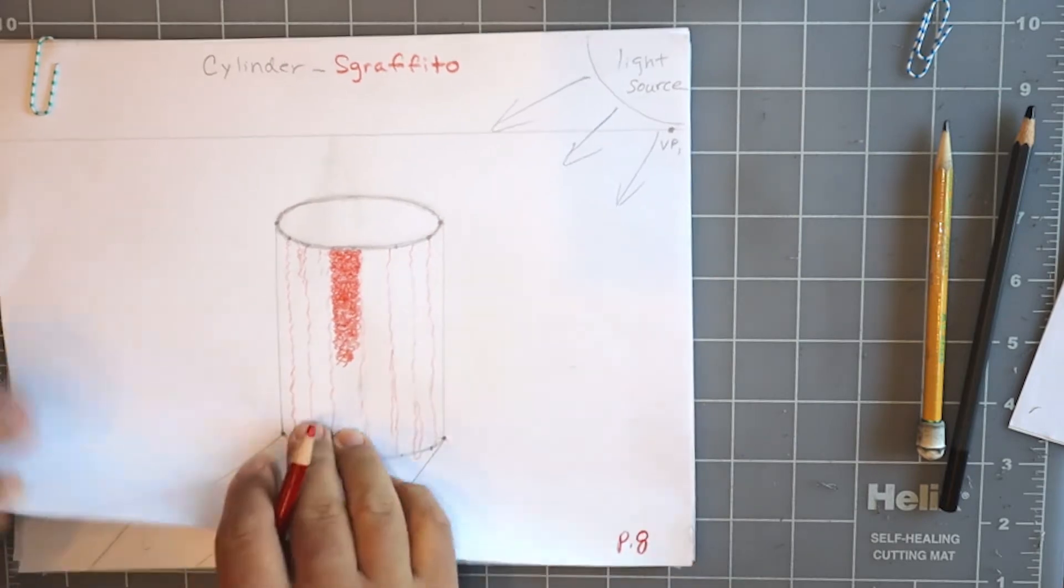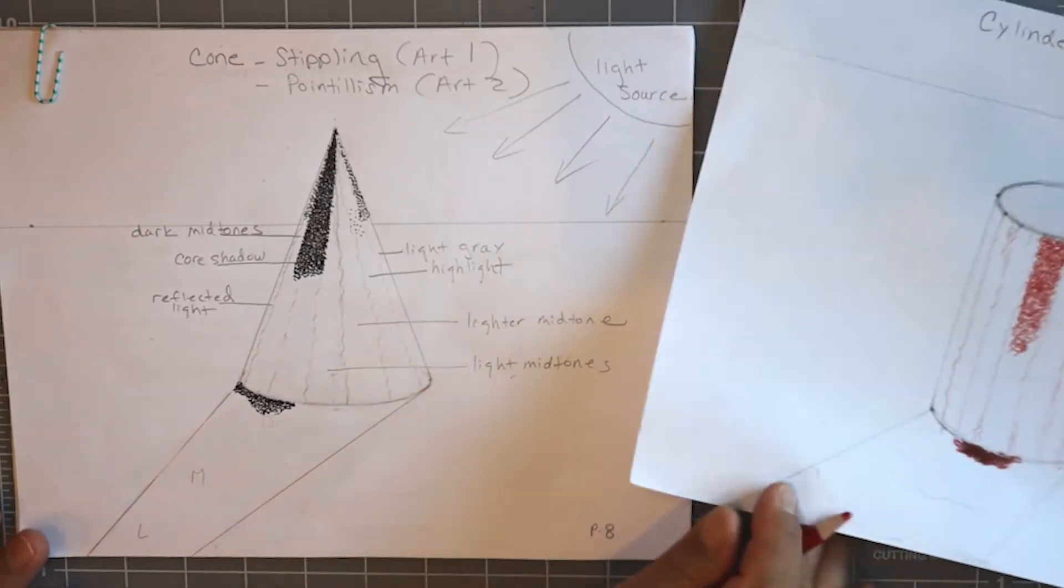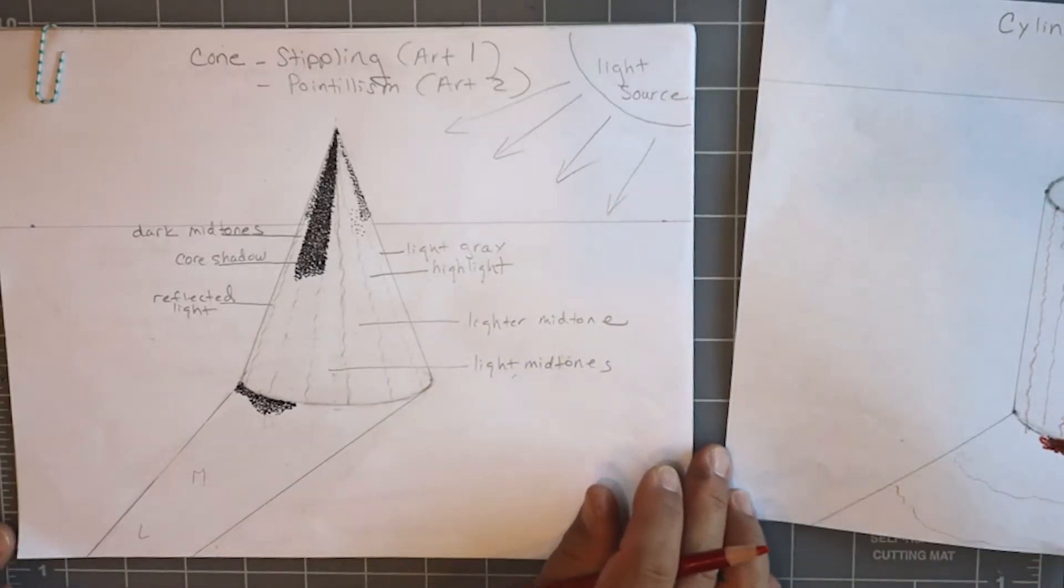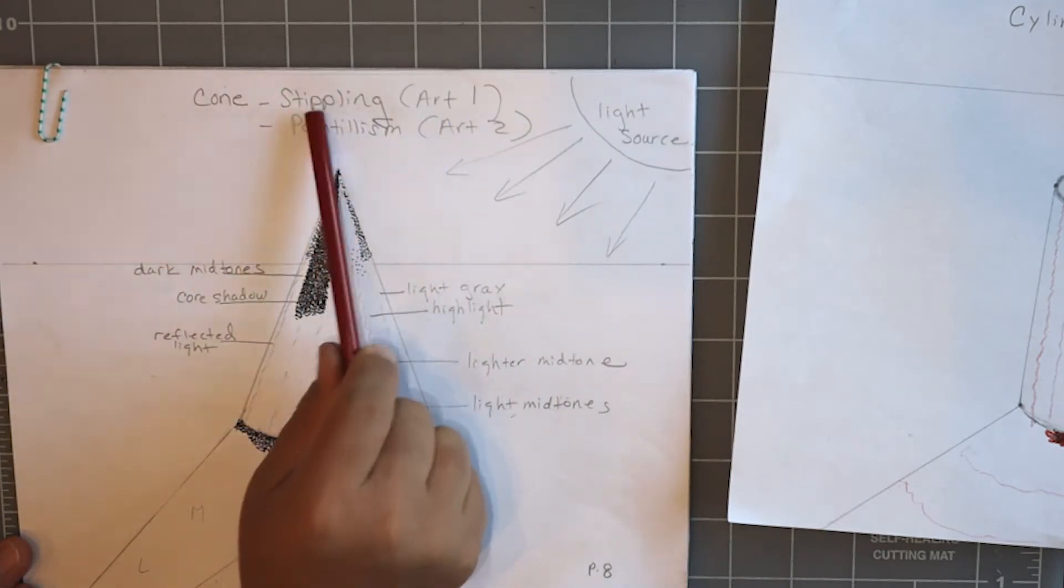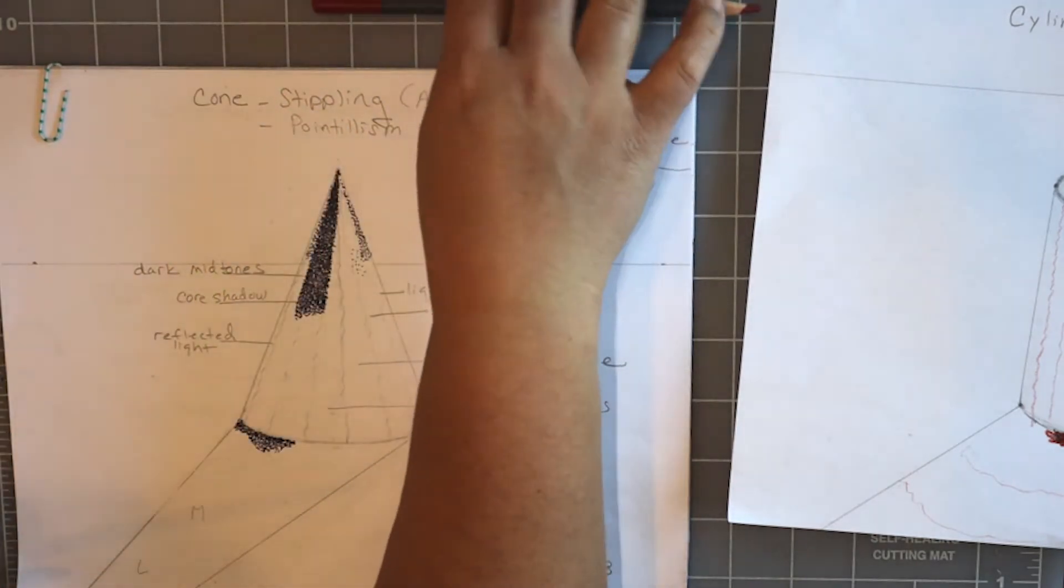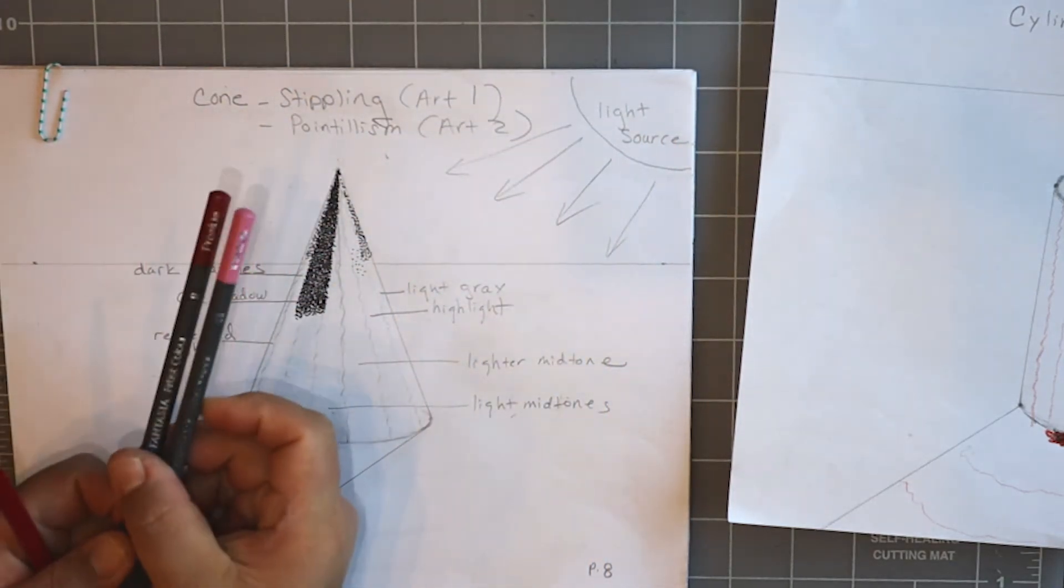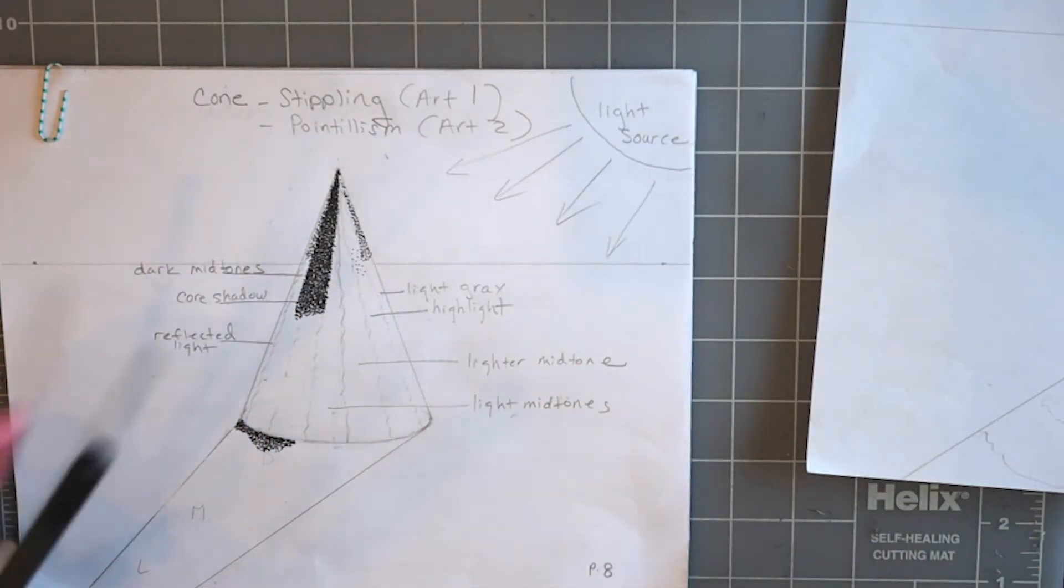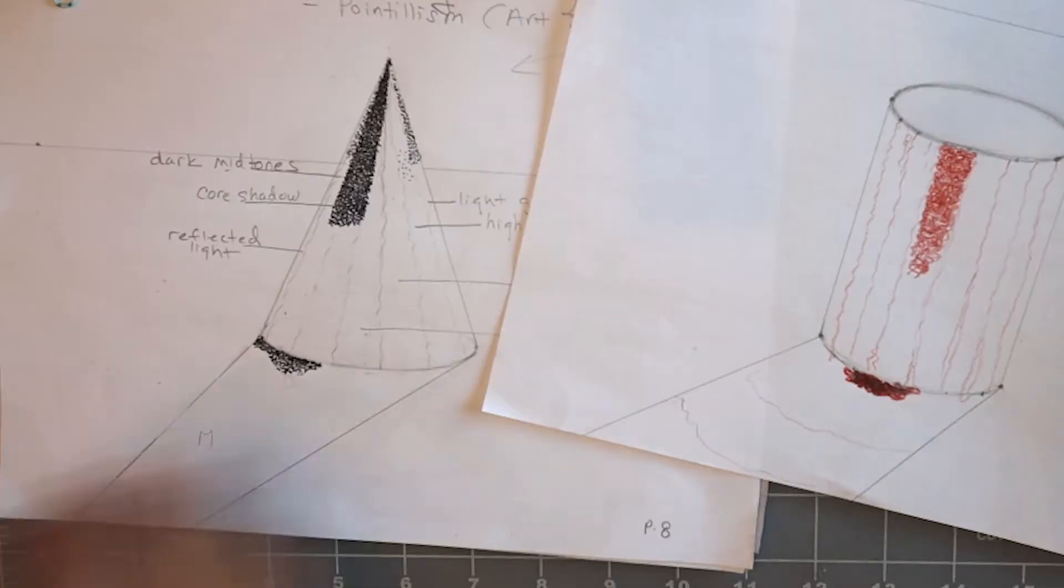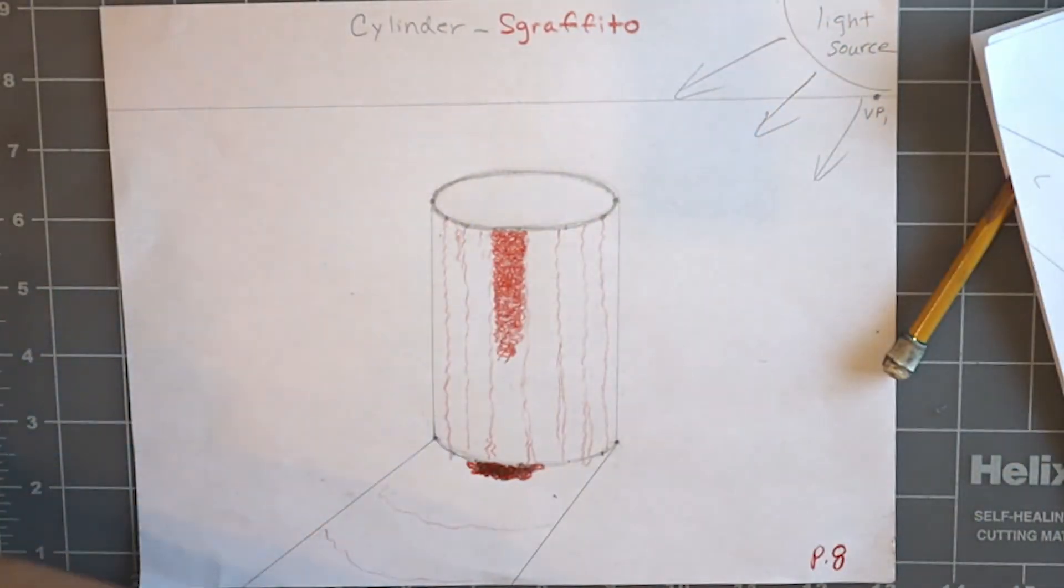But until then, art one, you're going to be working on this, which is our very last form. This is called the cone, and you are doing stippling. Art 2 is doing it in color, and they're using a darker color, a lighter tint of the color, and they're using black colored pencil. So, I want art ones to be working on this guy here while I work with R2s for a few minutes on this.